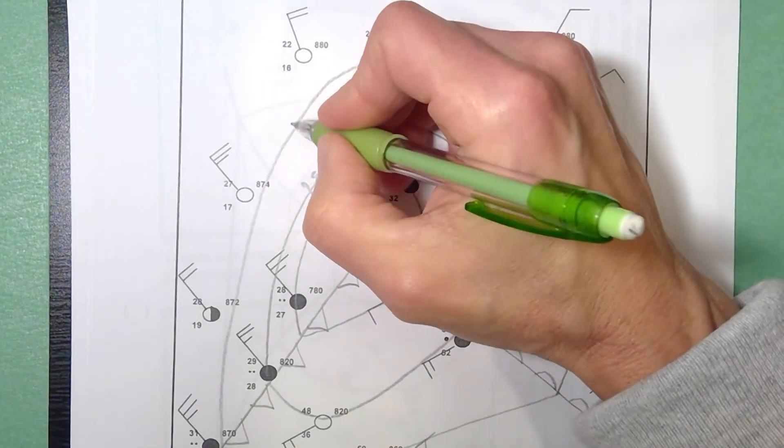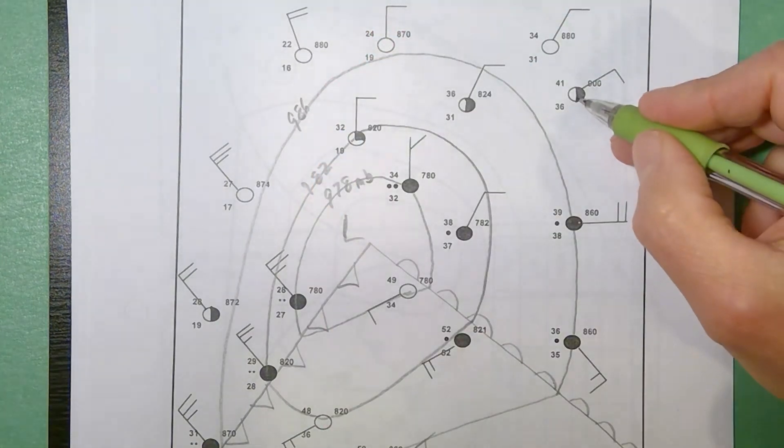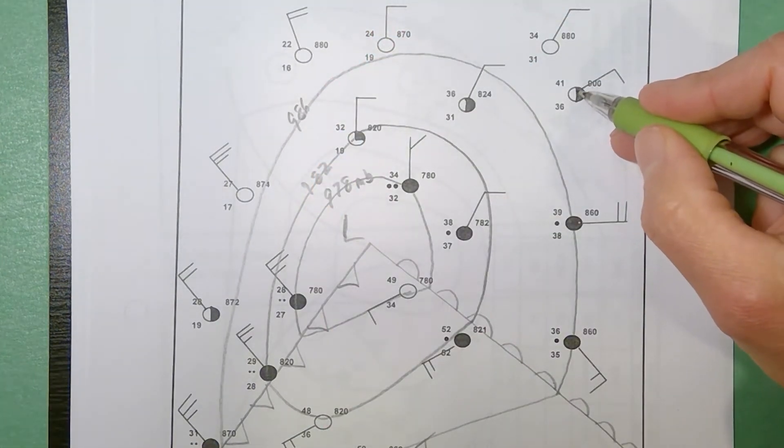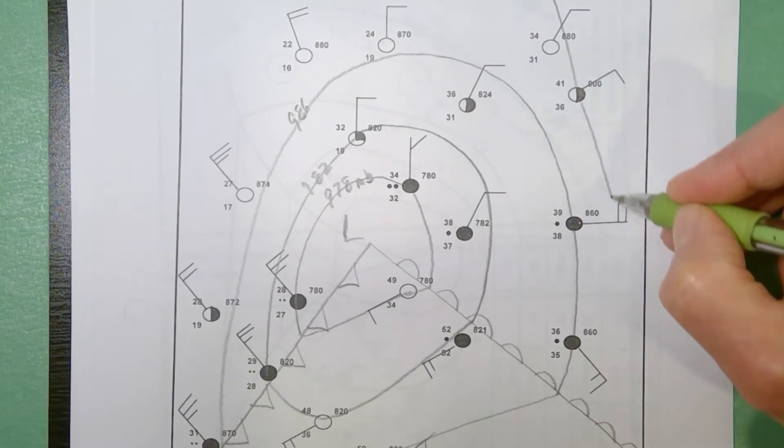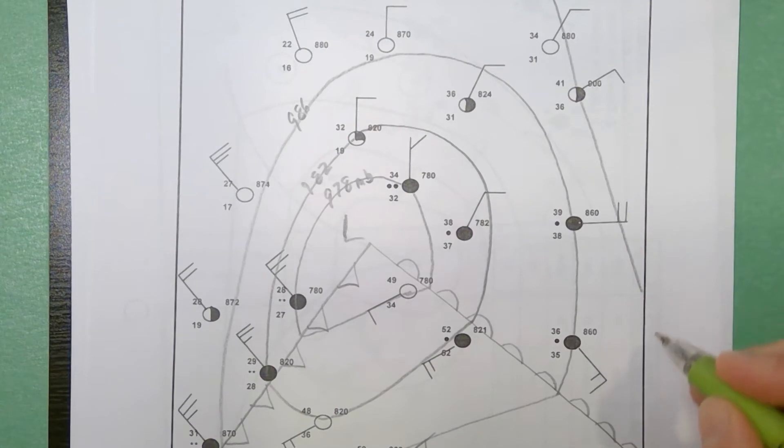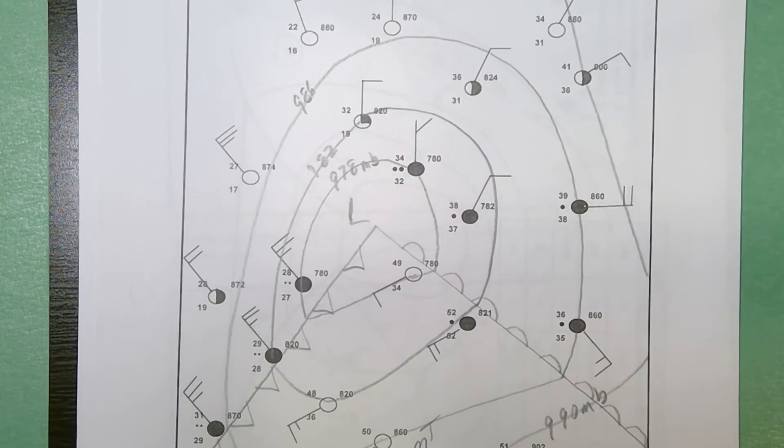We have a 990 up here. Your 990 has to come through this station, probably goes off the map, and then comes back through here. So this would be 990 millibars in those two places.